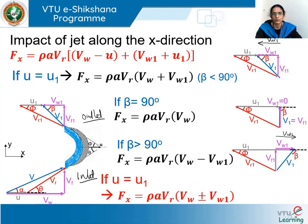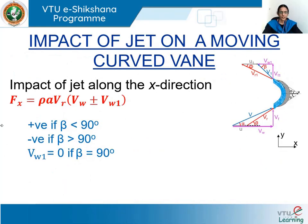In general, if u = u1, the impact of the jet along the x direction is Fx = ρA·vr × (vw ± vw1), where ρ is the mass density, A is the cross-sectional area of the jet, vr is the relative velocity, vw is the velocity of whirl at inlet, and vw1 is the velocity of whirl at outlet. We use the positive sign when β < 90°, the negative sign when β > 90°, and when β = 90°, vw1 is reduced to zero.